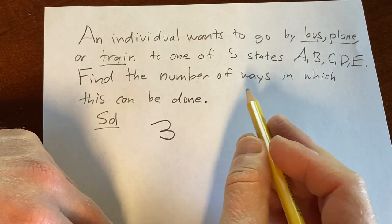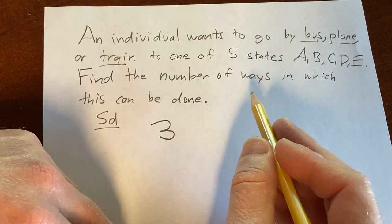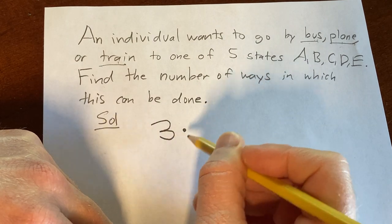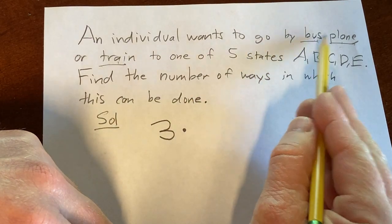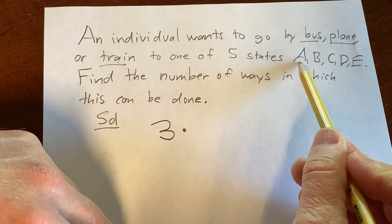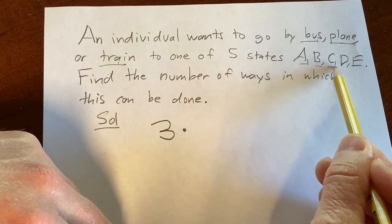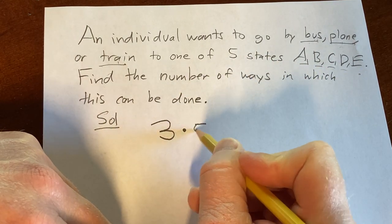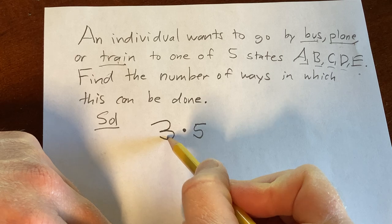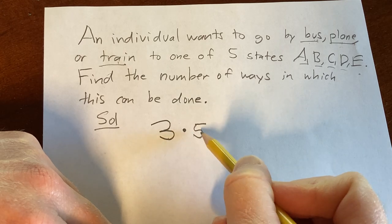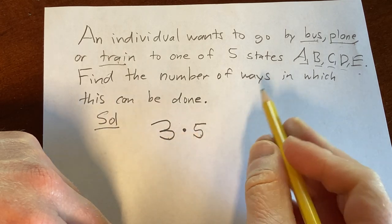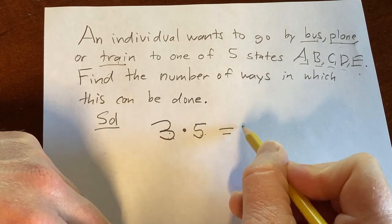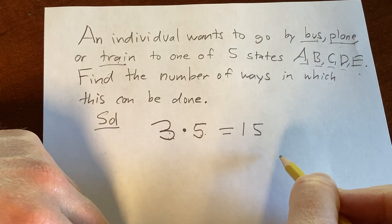The multiplication rule for counting says that what you do now is you multiply — for each of these ways, there's five ways to pick a state. So there's five choices for your state. Three ways to pick a mode of transportation, five ways to pick a state, so the number of ways to do both things is 15. It's just the product.